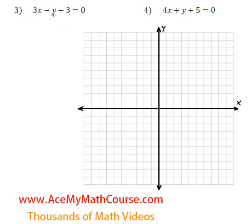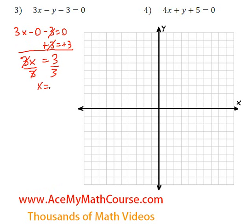The x-intercept occurs when y is 0. So 3x minus 0 minus 3 is equal to 0. I'm going to add 3 to both sides of the equation to solve for x. So 3x is going to be equal to 0 plus 3, just 3. Then divide both sides by 3. And x will be 3 over 3, which is 1.